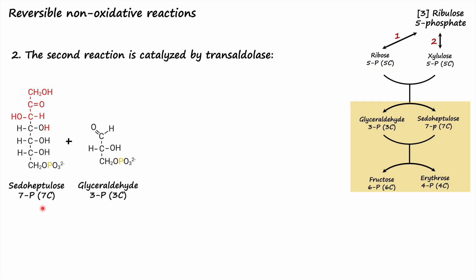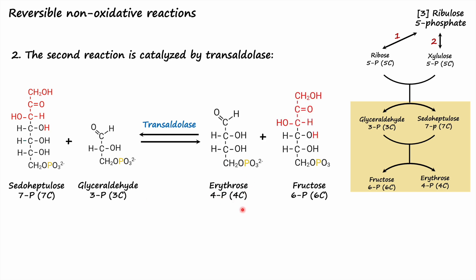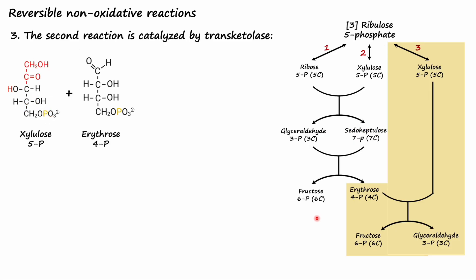The second reversible non-oxidative reaction is carried out by transaldolase. Using sedoheptulose 7-phosphate and glyceraldehyde 3-phosphate obtained from the previous reaction, transaldolase catalyzes the transfer of a three-carbon dihydroxyacetone group from sedoheptulose 7-phosphate (the ketose phosphate) to glyceraldehyde 3-phosphate (the aldose phosphate), converting them into erythrose 4-phosphate and fructose 6-phosphate.